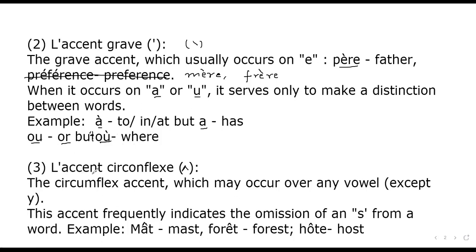The third accent is l'accent circonflexe, the circumflex accent, which may occur over any vowel except y. This accent frequently indicates the omission of an s from a word. For example: mât, which means mast; forêt, which means forest; hôte, which means host. If you check the spelling: m-a-s-t becomes m-â-t with circumflex; similarly h-o-s-t becomes h-ô-t-e with circumflex.